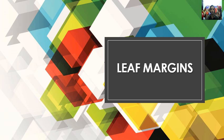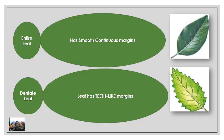Today we will learn about leaf margins — how the leaf margins look. The first case is the entire leaf. This leaf has smooth edges with no cutting from the sides. Such a leaf is known as an entire leaf.